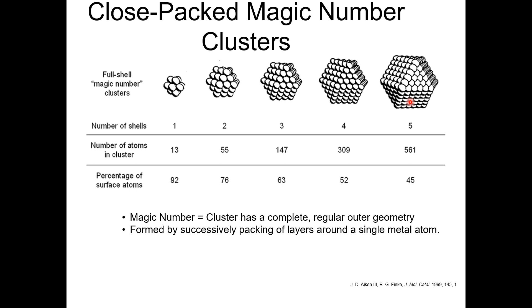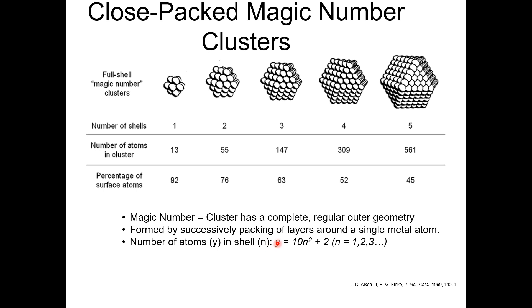For the number of atoms: if we denote the number of atoms by y and the shell number by n, then we have the relation y = 10n² + 2, where n = 1, 2, 3, and so on. This is the specific formula for calculating the number of atoms in a shell.